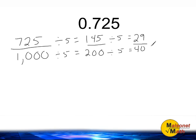The only common factor that 29 and 40 share is the number 1. And when the number 1 is the only common factor remaining, you have reduced your fraction into simplest form. So we would say that 725 thousandths expressed as a fraction in simplest form is 29 fortieths.